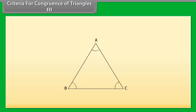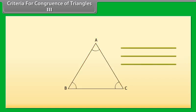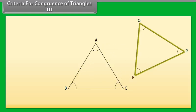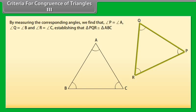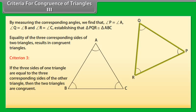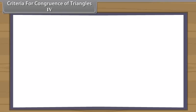Criteria for congruence of triangles, Criterion 3: In order to explore another criterion, we again take a triangle ABC. Now take 3 thin sticks equal in length to sides AB, BC and CA of triangle ABC. Place them in any order to form triangle PQR near the triangle ABC. By measuring the corresponding angles, we find that angle P is equal to angle A, angle Q is equal to angle B, and angle R is equal to angle C, establishing that triangle PQR is congruent to triangle ABC. Thus, we have Criterion 3: If the 3 sides of one triangle are equal to the 3 corresponding sides of the other triangle, then the 2 triangles are congruent. This is referred to as SSS — side-side-side congruence rule.